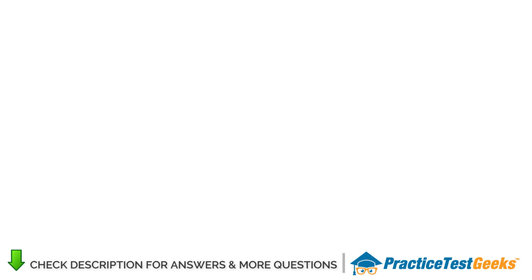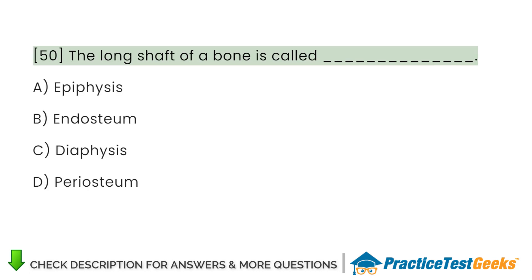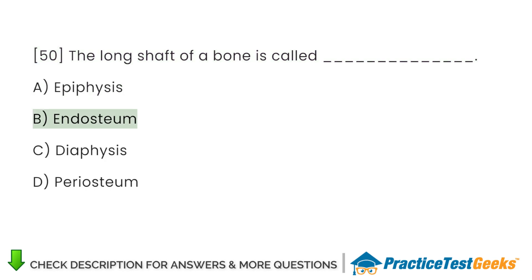The long shaft of a bone is called: A. Epiphysis. B. Endosteum. C. Diaphysis. D. Periosteum.